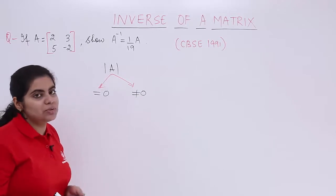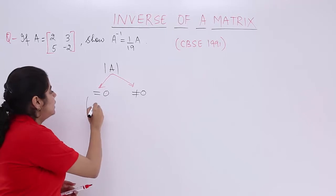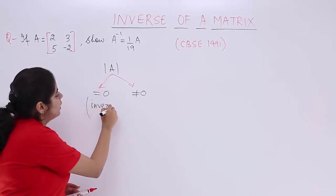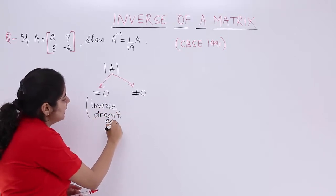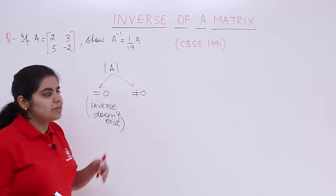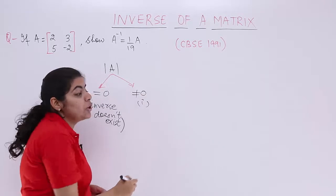If it is equal to 0, the matrix is a singular matrix and the determinant value 0 means inverse does not exist. You cannot find the inverse. That happens when the value is equal to 0. But what if the value is not equal to 0? If not equal to 0, you have to follow certain steps.